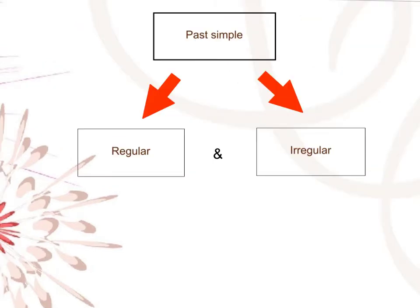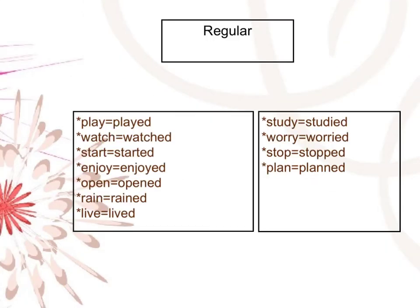Past simple — regular and irregular verbs. Regular verbs: play → played, watch → watched, start → started, enjoy → enjoyed, open → opened.